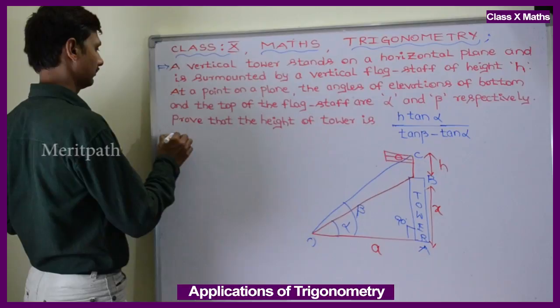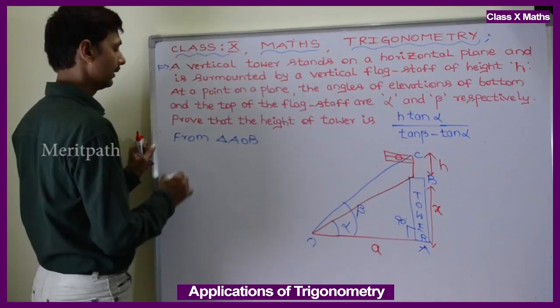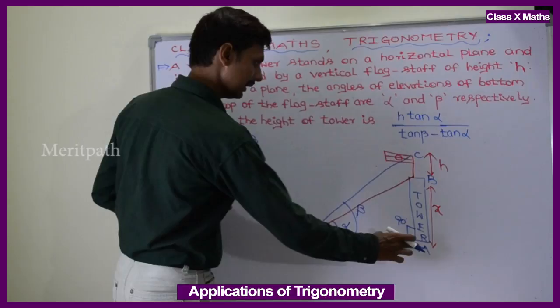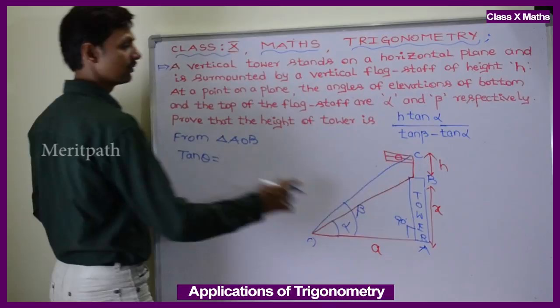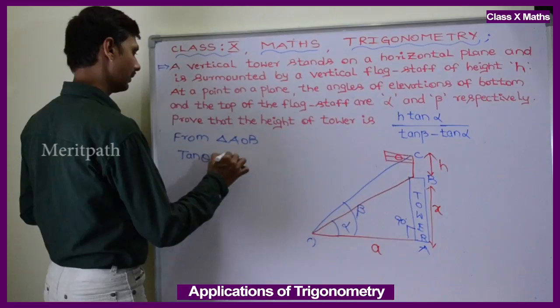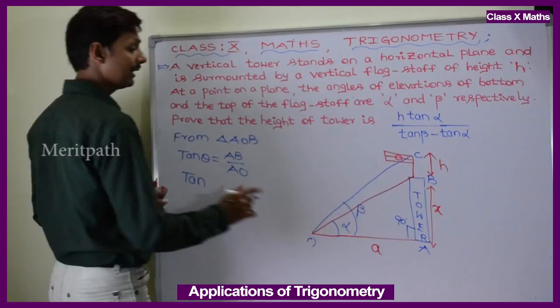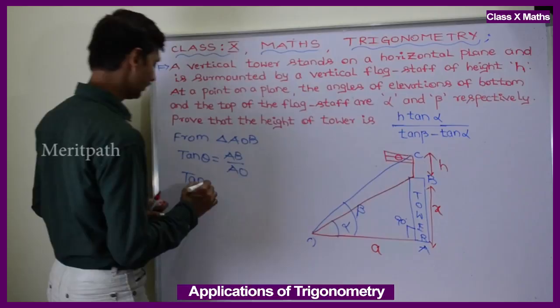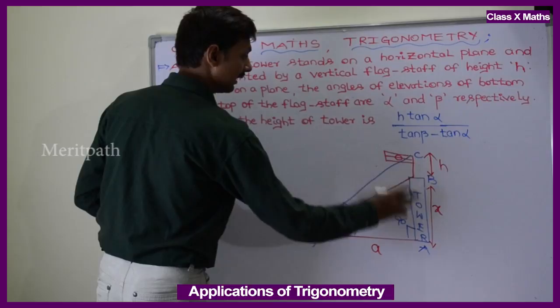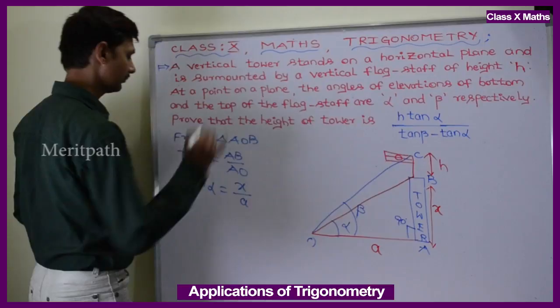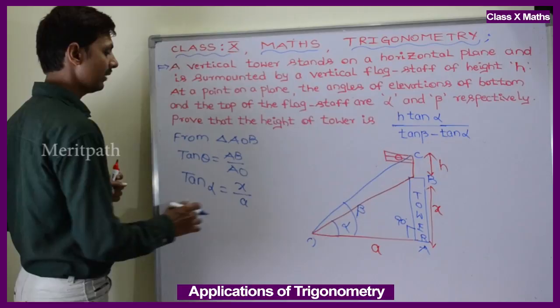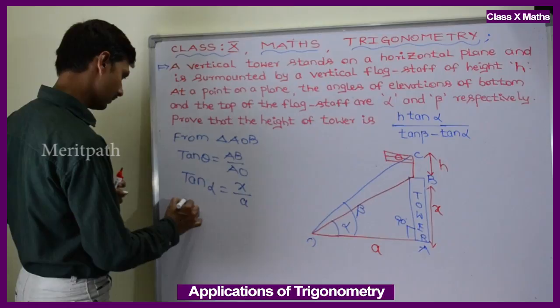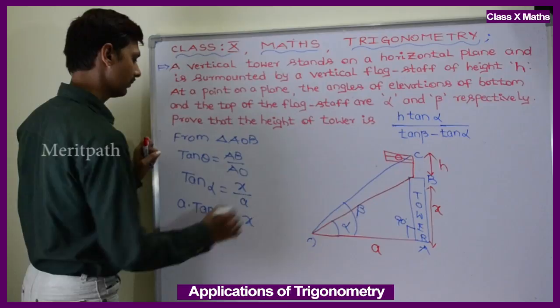From triangle AOB, tan α = X / a. So A·tan α = X, which gives us the value of a: a = X / tan α. Since 1/tan α = cot α, we have a = X·cot α. This is our first equation.